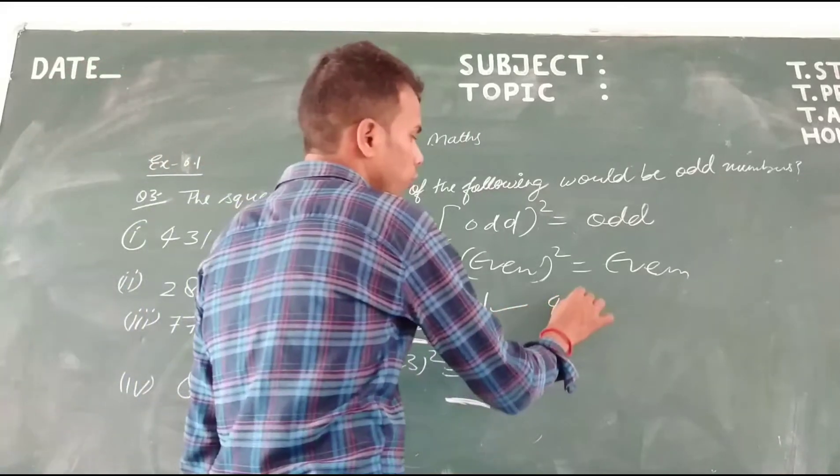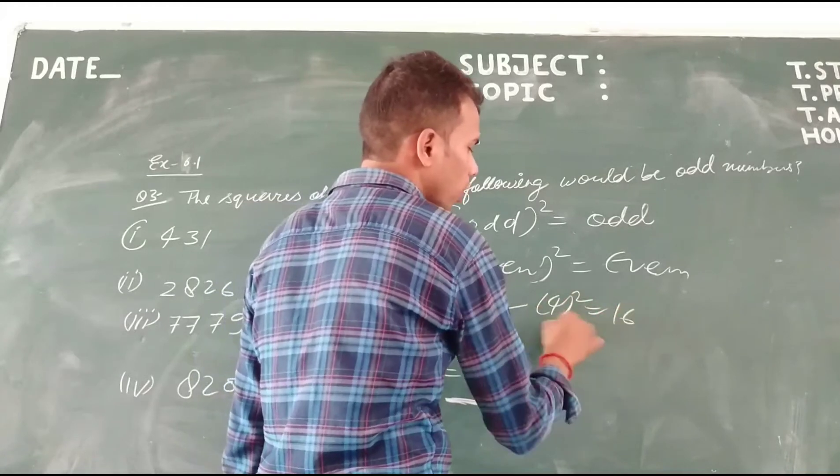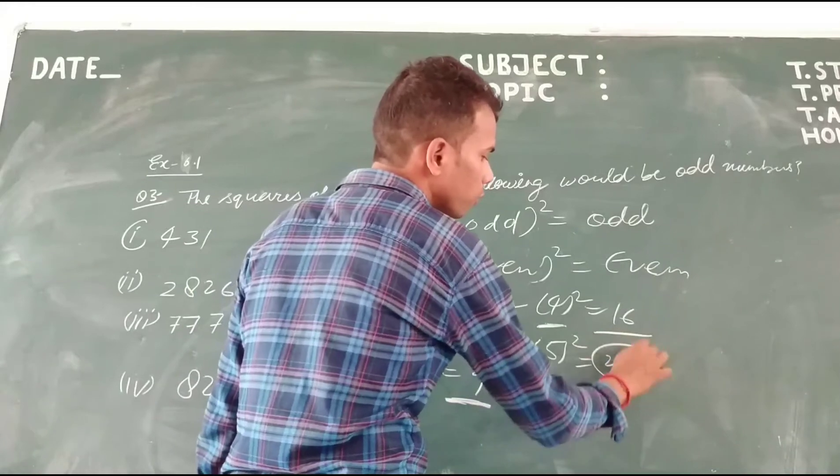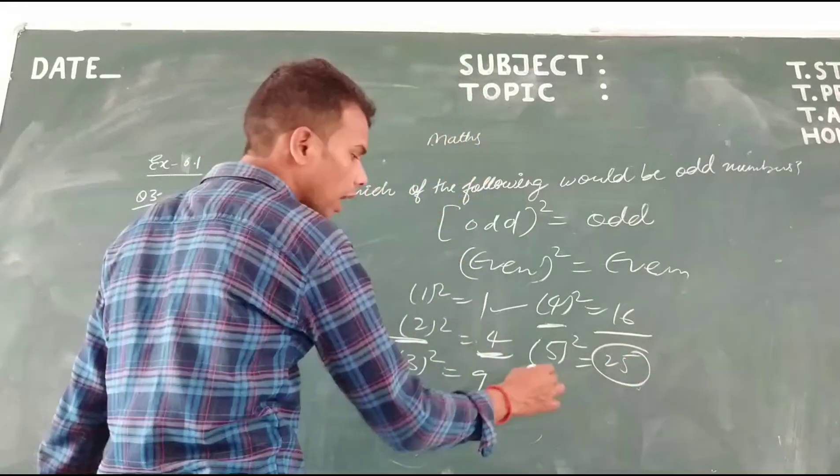4 squared is 16, 4 is even. 5 squared is 25. 25 is odd, 5 is odd.